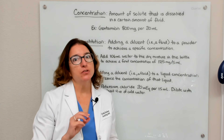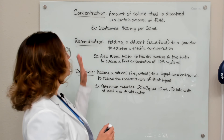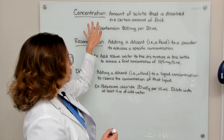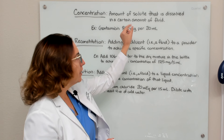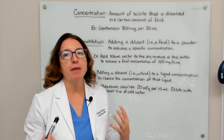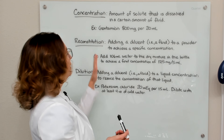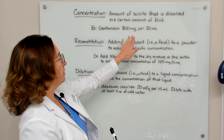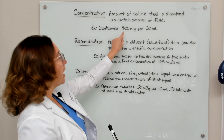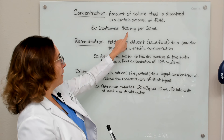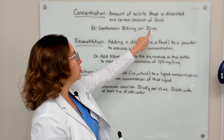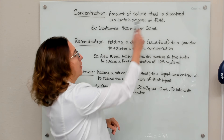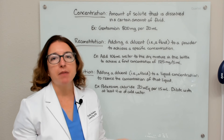Before I get into specific problems, I just want to do a review of some terminology. When we are talking about a concentration, that's the amount of solute that is dissolved in a certain amount of fluid. For example, if we have a vial of gentamicin that says 800 milligrams per 20 mL, the solute is the 800 milligrams and the amount of solution is 20 mL. So the concentration of this vial is 800 milligrams per 20 mL of solution.